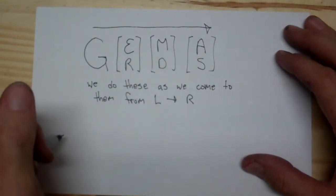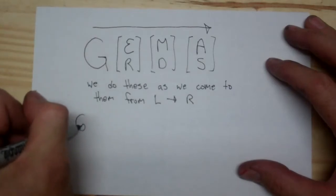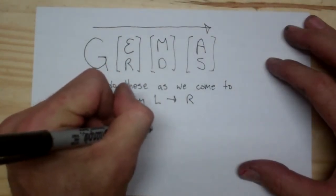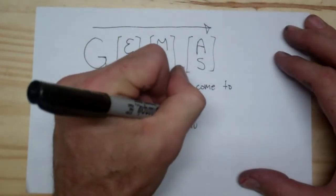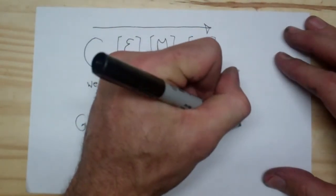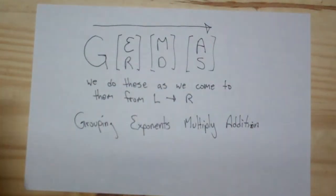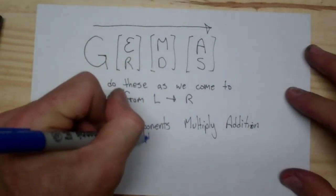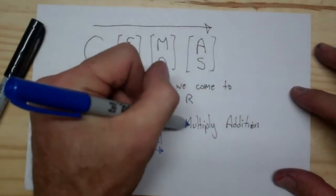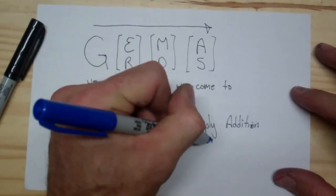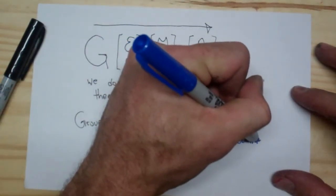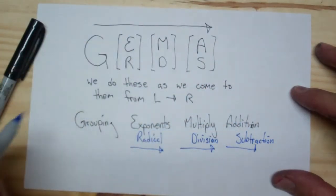So these are our actual orders of operation. We have grouping symbols, then exponents and all the different ways we can write those, then multiplication — and division is just part of multiply — and then addition. If you have a radical in your problem, you do your exponents and radicals as you come to them from left to right. If you have division, you do multiplication and division as you come to it from left to right. And if you have subtraction, you do that as you come to it from left to right.